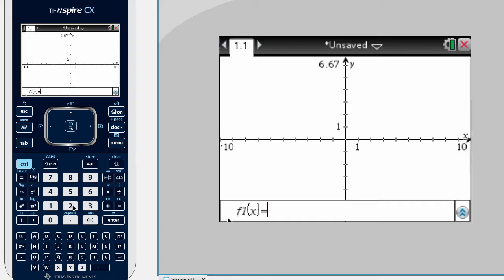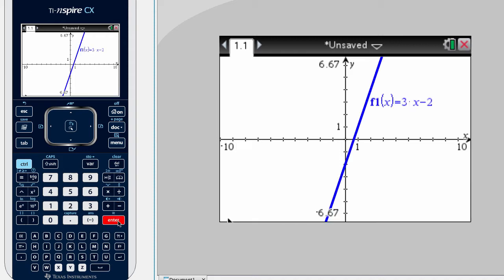When you open a graphing window, an entry line will show up at the bottom of your graph, and you can go ahead and enter in the formula you want. So I put in 3X-2, hit enter key, and it graphed the line for us.